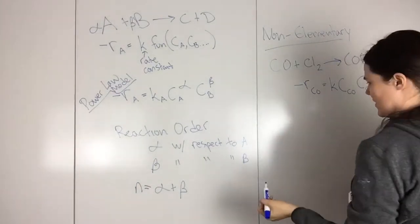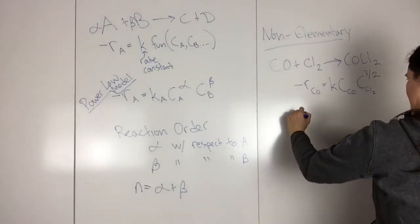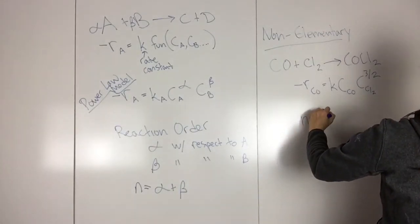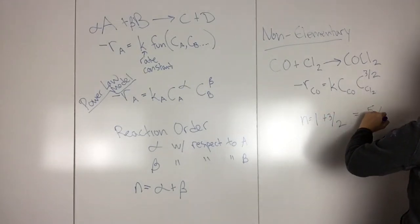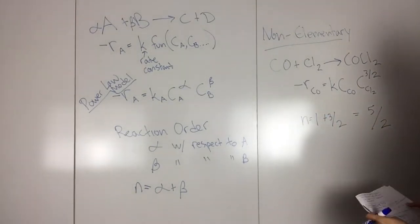So then the overall order of this is N equals one plus three-half. So it's five-halves overall.